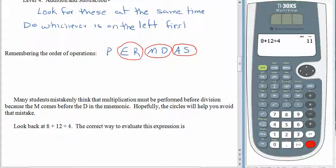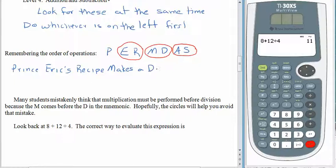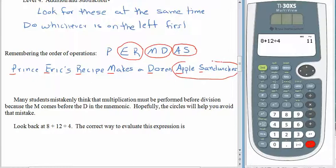The other thing you might do is use a sentence or a phrase that starts off with the letters that you need. For example, something like: Prince Eric's recipe makes a dozen apple sandwiches. You can make up your own sentence — whatever helps you remember the order of operations: P for parentheses, E exponents and roots, M multiply, D divide, A add, S subtract. But just like before, do something that helps you remember what operations have the same priority level.